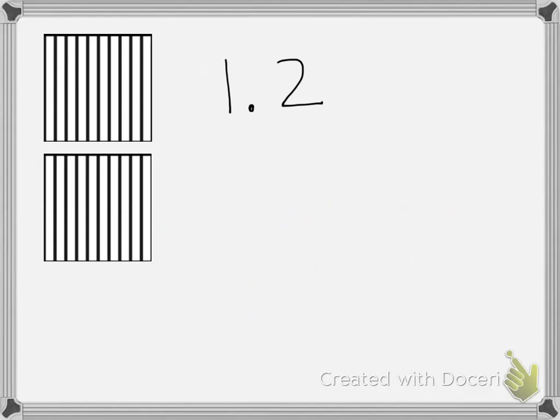On this one, we have the number 1 and 2 tenths. So our decimal is 1 and 2 tenths. So if we think about what that means, our whole number, the whole number in our ones place that comes before the decimal point, tells us how many of the whole shape we're talking about, how many wholes we have. So we have 1 whole square colored in.